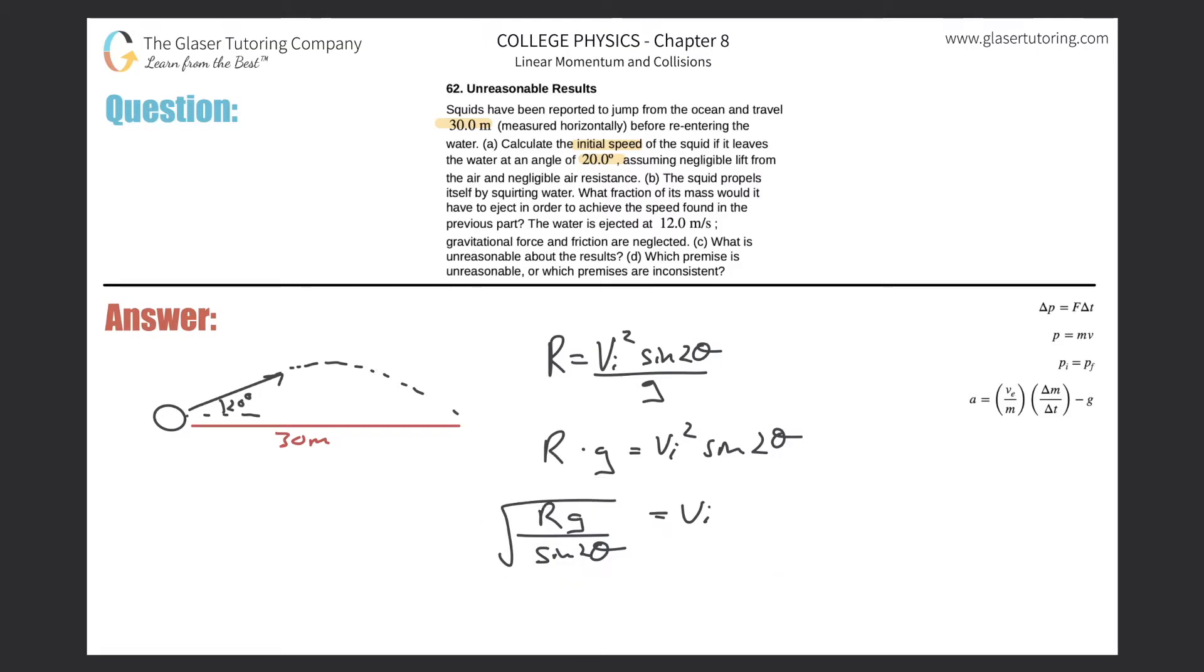To find that initial velocity all we got to do is plug in the numbers. The initial velocity will be equal to the square root of the range which was 30 multiplied by g which is 9.8 divided by the sine of two times your initial angle of 20. Let's calculate it. The initial velocity will be equal to the square root of 30 times 9.8 divided by the sine of 40, so 21.4 meters per second. That would be the initial velocity, that takes care of letter A.